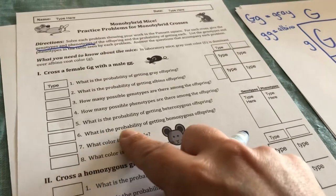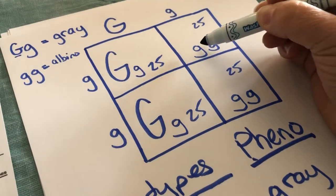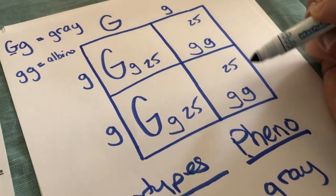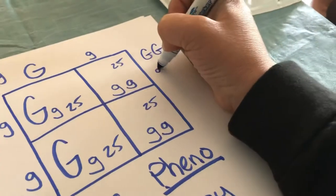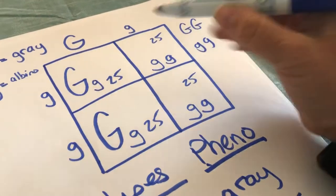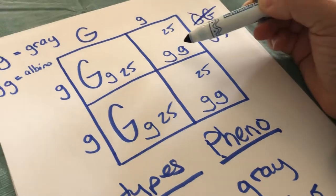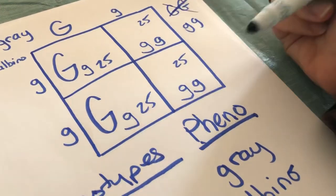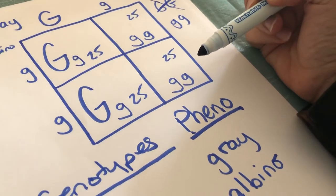Number six, what's the probability of getting homozygous offspring? I only have two boxes where we have two lowercase. Now, two lowercase or two uppercase, both combinations are considered homozygous. But do we have two capital G's in any of these boxes? We don't. But we do have two boxes that have two lowercase g's. We have a 50% chance of having homozygous offspring.